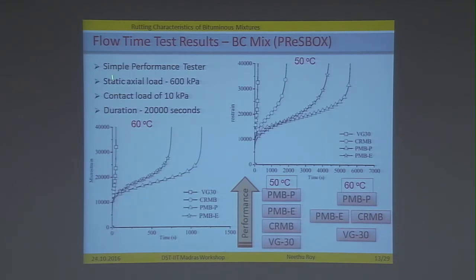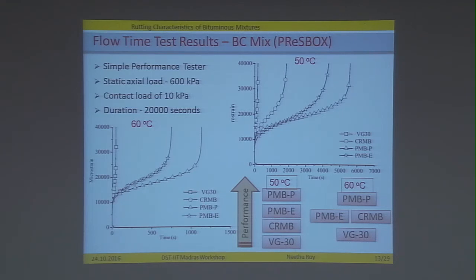For the flow time test results on BC mixes, using a simple performance tester or AMPT equipment, a load of 600 kPa was applied with a contact load of 10 kPa and test duration of 20,000 seconds. Plotting microstrain versus time, at 50°C results are similar to the rut wheel testing. At 60°C there was slightly better or equal performance from PMB elastomer and CRMB, while PMB plastomer performed well as in any other case.